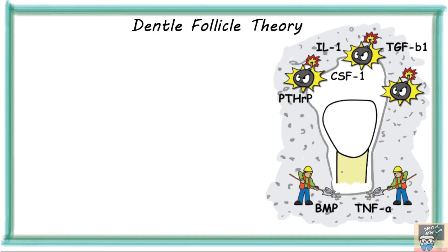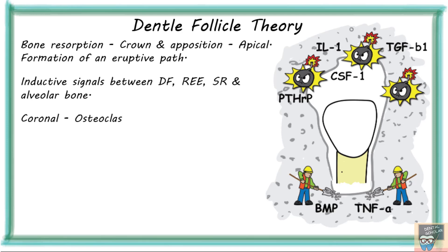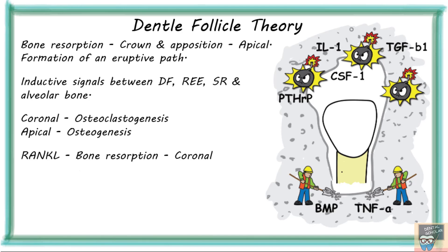Next is the dental follicle theory. The dental follicle is capable of inducing bone resorption coronal to the developing crown and bone apposition apical to the developing tooth, resulting in formation of an eruptive pathway. The coronal part of the dental follicle regulates osteoclastogenesis and the apical part regulates osteogenesis. RANKL is a marker gene for bone resorption expressed in the coronal half of the dental follicle, while BMP2 is a marker gene for bone formation expressed in the apical half.